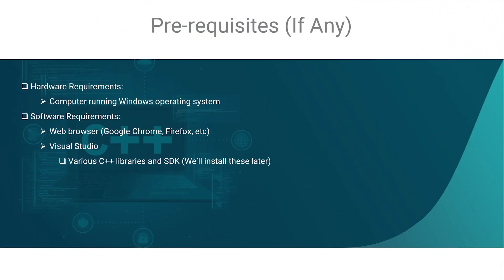Now, there are a few technical prerequisites for the course. Obviously, you're going to need a computer. A computer running Windows OS is definitely preferred when it comes to coding in C++. You'll also need a basic web browser to download and view code snippets for the course. And lastly, you'll also need access to Visual Studio, which we'll actually cover in section 2.